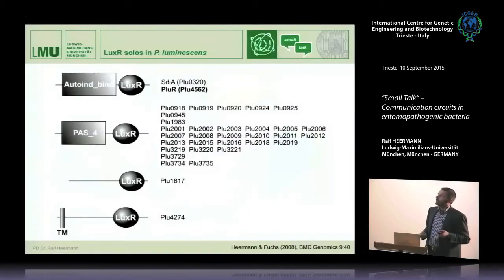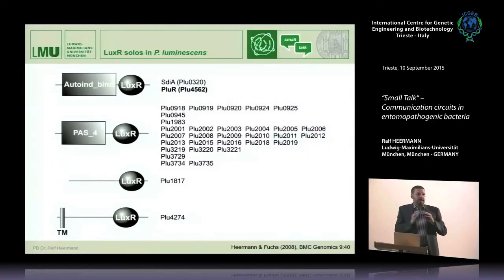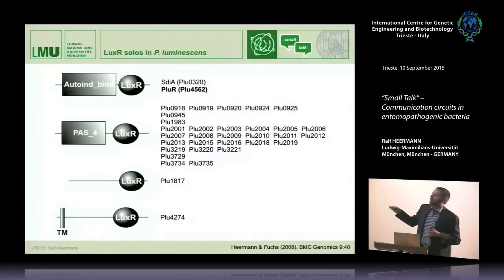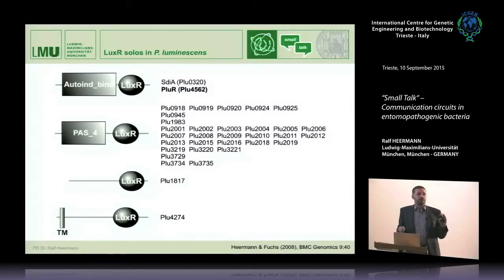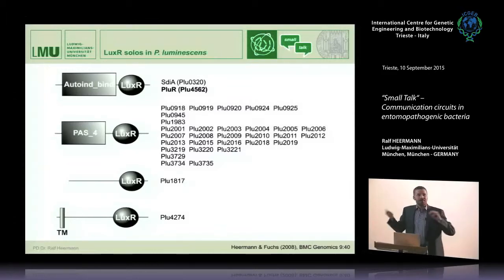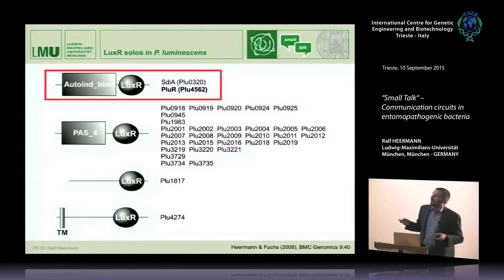Why are we studying these organisms? Because Photorhabdus species have been shown to have a huge number of LUX-R type proteins encoded in their genome, especially those LUX-R solos. You can see here all these LUX-R type receptors — Photorhabdus luminescens has 40 of them. We have LUX-R type receptors of different domain organizations: two have the typical homoserine lactone binding site, and plenty have another predicted binding site where we have first indications that it might detect hormones from the insect, though this is not yet proven.